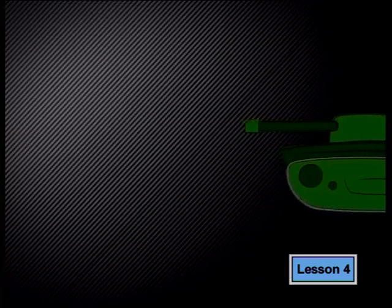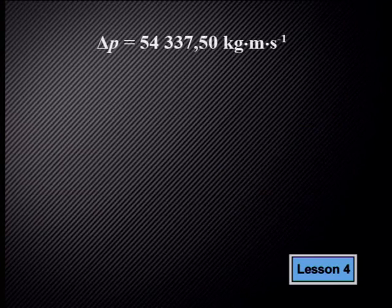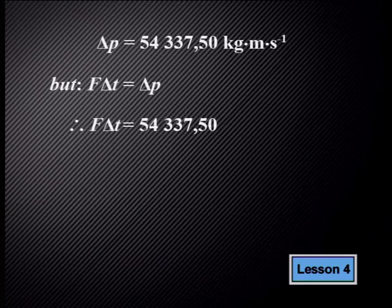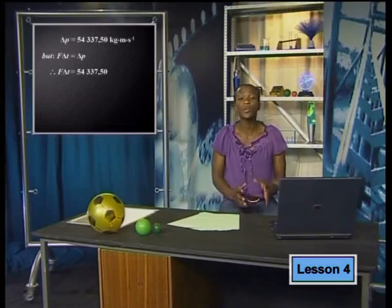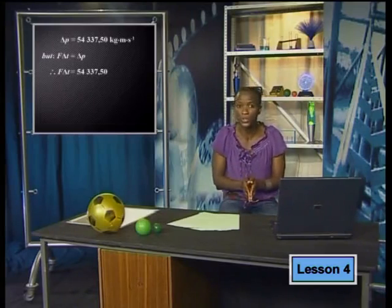If the projectile experiences the force of the explosion for two and a half seconds, what is the force that pushes the projectile forward? Earlier, we calculated that the projectile's change in momentum was equal to 54,337.5 kilogram meters per second. But impulse is equal to the change in momentum, so force times change in time equals 54,337.5. The explosion takes two and a half seconds, so we can now substitute this into what we know.